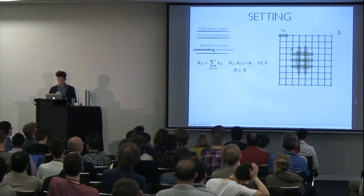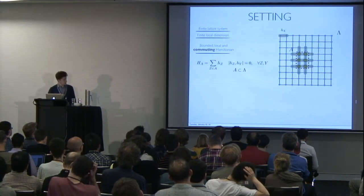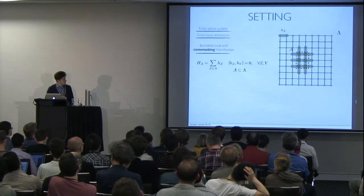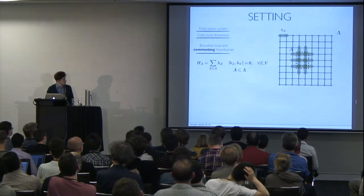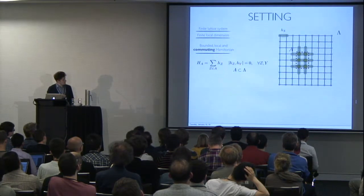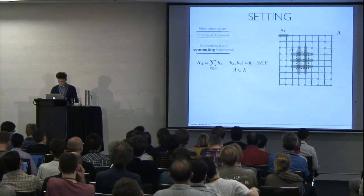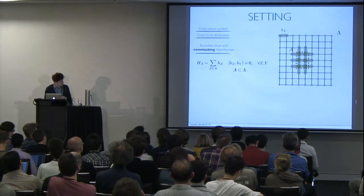Very importantly, and hence the title of the talk, I'm only going to be considering commuting Hamiltonians, meaning a Hamiltonian which can be written with local terms that commute. They represent the local terms with little green bubbles.